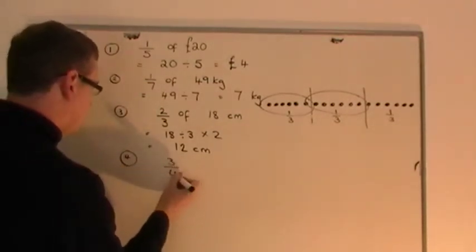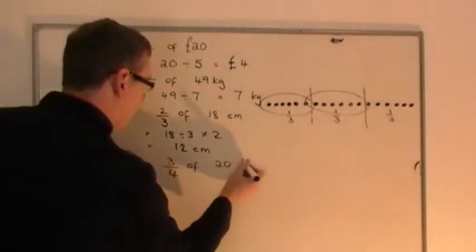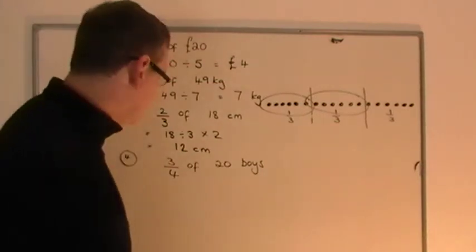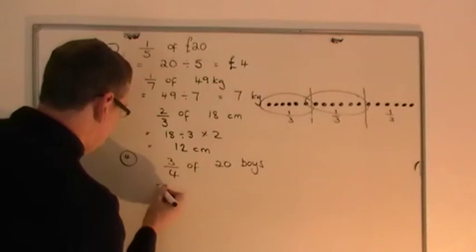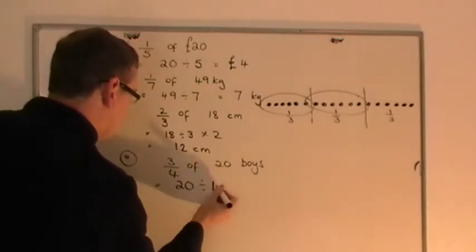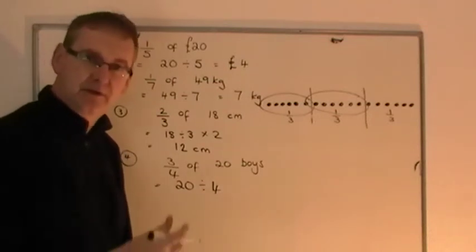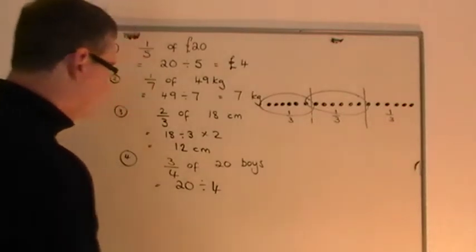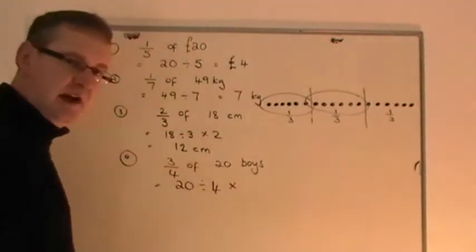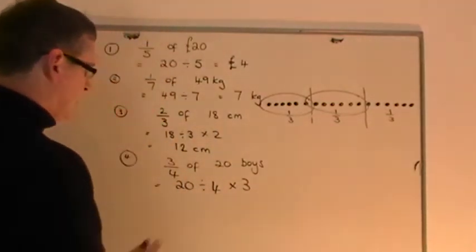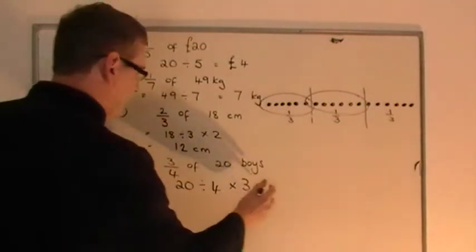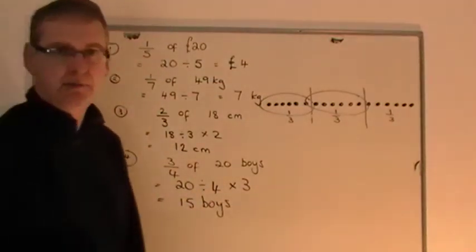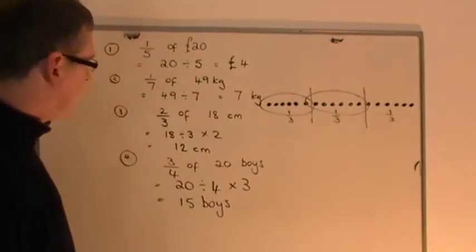Let's say I had three-quarters of twenty boys. Three-quarters of twenty boys have got blonde hair, and I want to know how many boys have got blonde hair. All you do is take the twenty boys and share into four — that gives you quarters. Twenty share by four gives you a quarter of the boys, which is five. Then you times it by three to get three-quarters. Twenty share by four is five; five times three gives you fifteen boys.